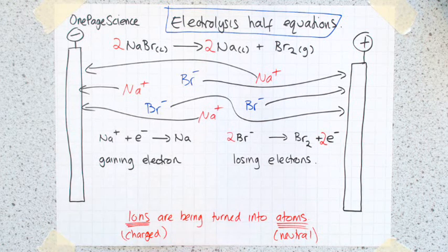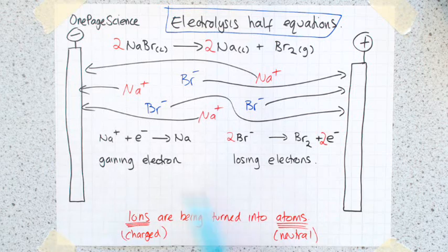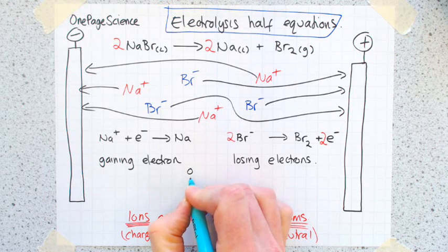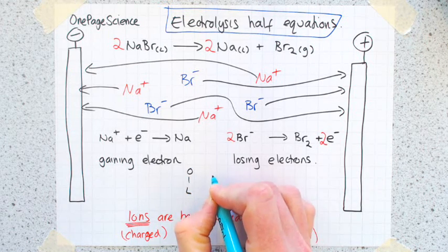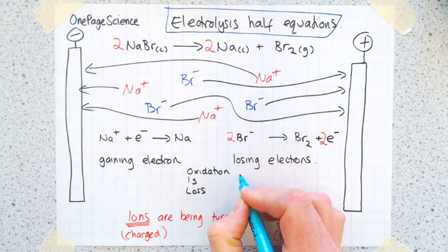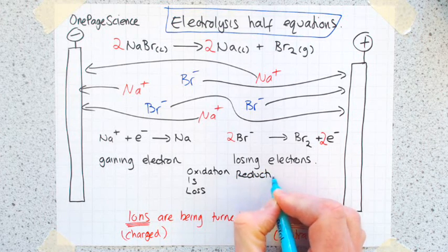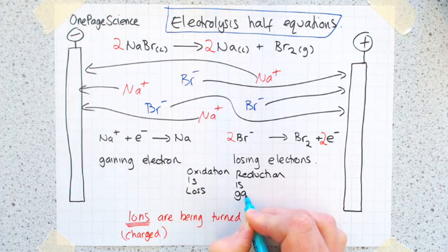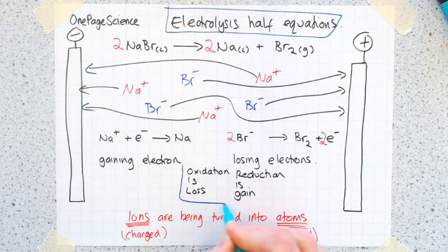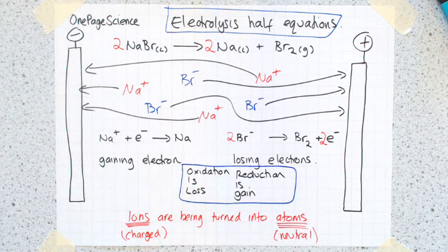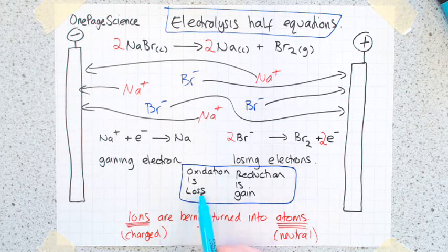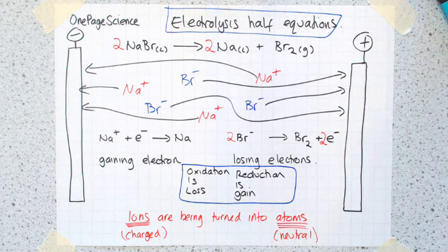Now, this is the point I want to introduce you to a mnemonic to help you remember this - you have to describe this in terms of oxidation or reduction. If you remember this mnemonic: oxidation is loss, reduction is gain. The mnemonic's OIL RIG - if you're losing electrons, it's oxidation, and if you're gaining electrons, it's reduction.